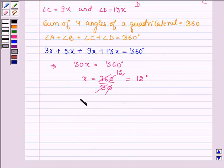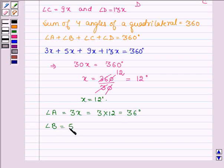Angle A equals 3x, which is 3 times 12, giving 36 degrees. Angle B equals 5x, which is 5 times 12, giving 60 degrees.